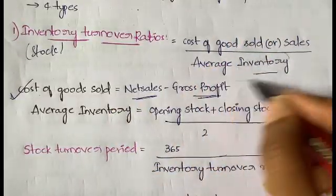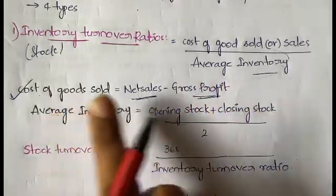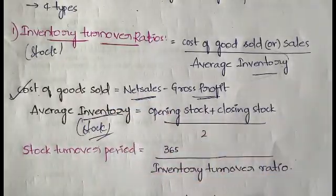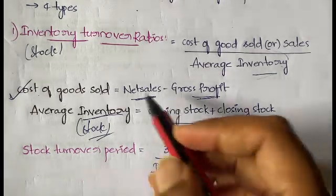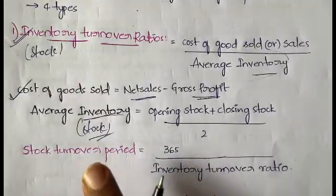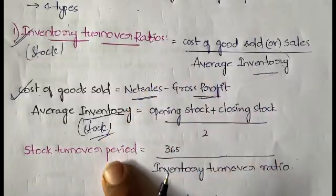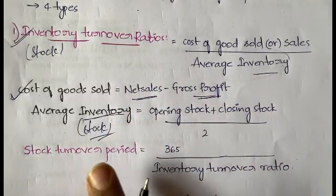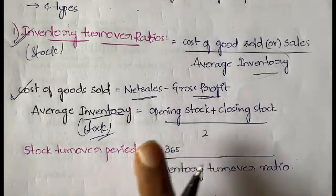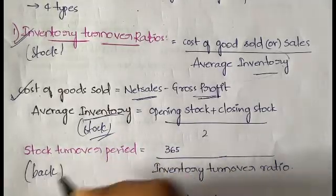Average inventory is calculated as opening stock plus closing stock divided by two. Inventory is nothing but stock. Once you are done calculating the inventory turnover ratio, you need to also calculate the stock turnover period. You should not stop at the ratio alone.